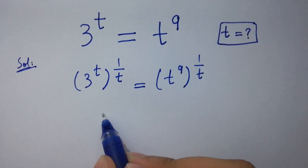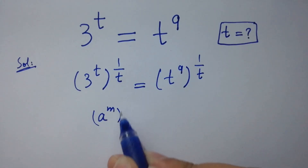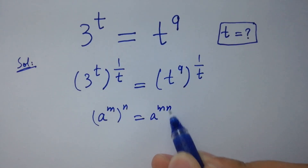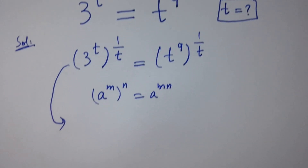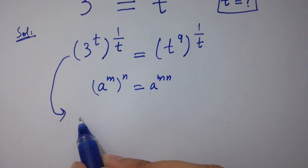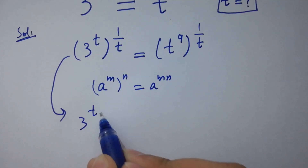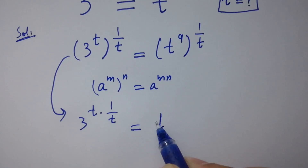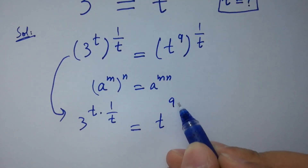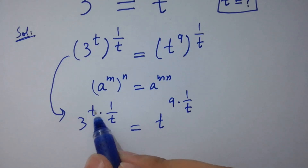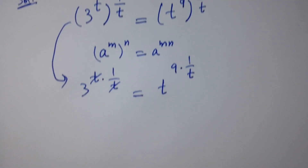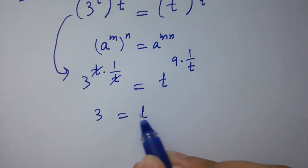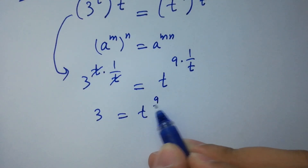As a to the power n, to the whole power m, equals a to the power mn, then it will be 3 to the power t times 1 over t, equals t to the power 9 times 1 over t. t and t cancel, so we have 3 equals t to the power 9 over t.